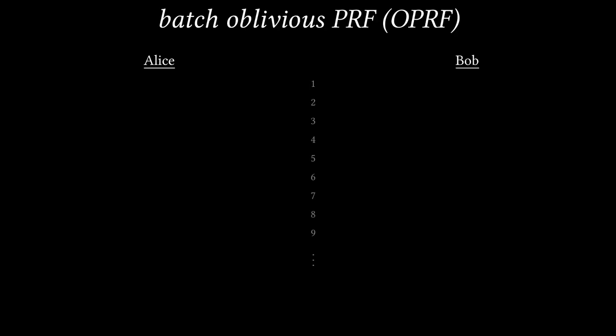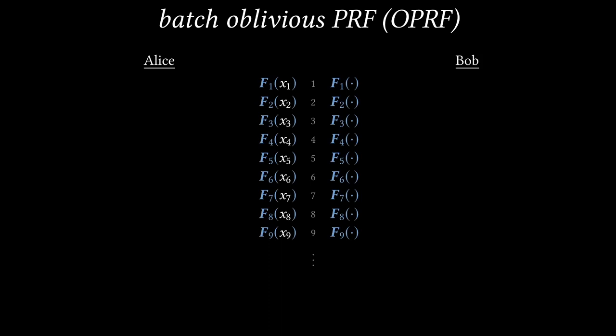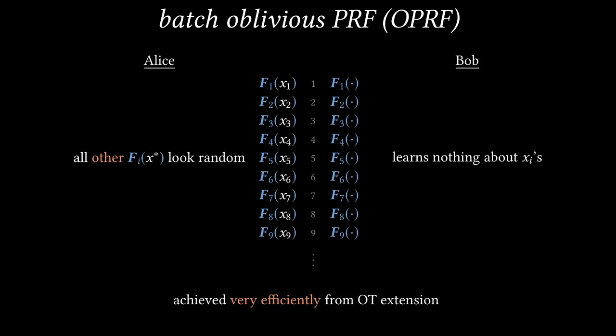The fastest semi-honest PSI protocols use a building block called Batch Oblivious PRF, or OPRF. In a batch OPRF, the receiver Alice has a list of M selection strings, one for each slot. Batch OPRF generates a different random function F for each slot. The sender, Bob, learns these functions in their entirety, meaning that he can evaluate each Fi on any input he likes. Alice learns only one output from each Fi, corresponding to her selection string Xi. Bob learns nothing about Alice's choice of selection strings, and Alice learns only one PRF output per slot. Because these are PRFs, any other outputs of these Fi will look random to Alice. Batch OPRF protocols can be achieved very efficiently from OT extension.